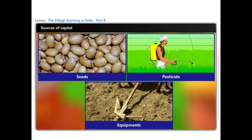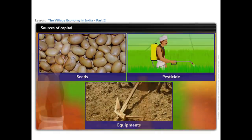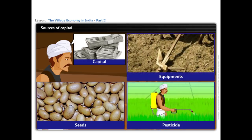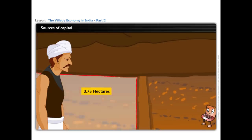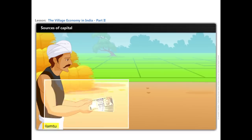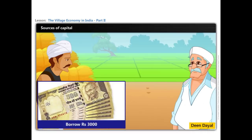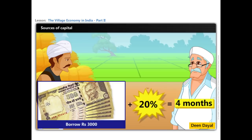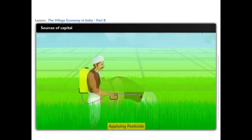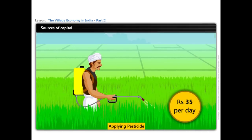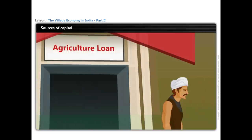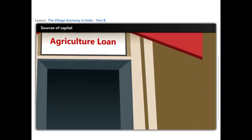Now let us look at the sources of capital for the farmers. Govind's son, Humtu, does not have enough capital for buying seeds, pesticides and farm instruments to cultivate his 0.75 hectares of land. How do you think Humtu gets the capital? Humtu has to borrow Rs 3,000 from the large farmer Deendayal, who agrees to the loan at an interest of 20% for 4 months. In return, Humtu also promises to work in Deendayal's farm for removing weeds and applying pesticide at Rs 35 per day. Why does Humtu agree to work for such low wages? As getting a loan is difficult for a small farmer, Humtu is left with no option.